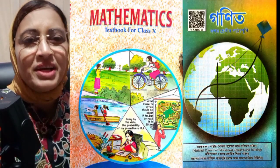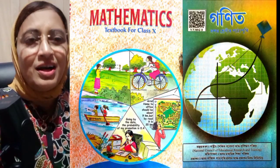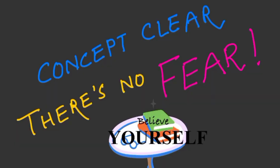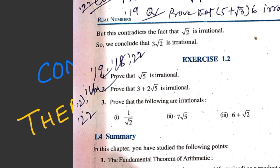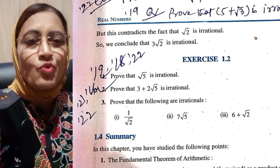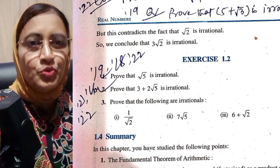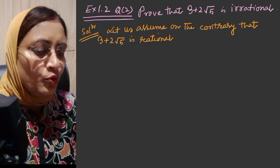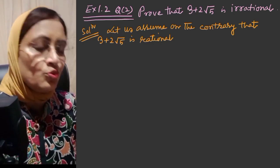Hello my dear squad, my name is Shufiya. I am going to show you concepts clearly — there is no fear. Let's start doing sums of Exercise 1.2, Class 10 General Math. Exercise 1.2, Question number 2: Prove that 3 plus 2 root 5 is irrational.